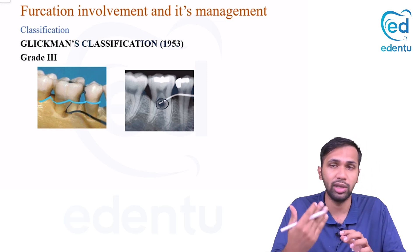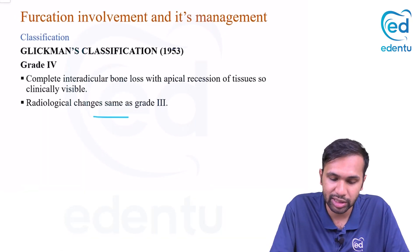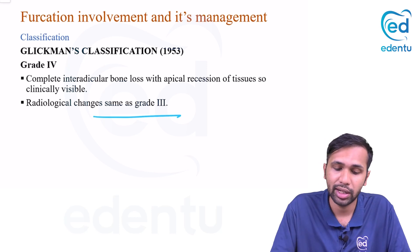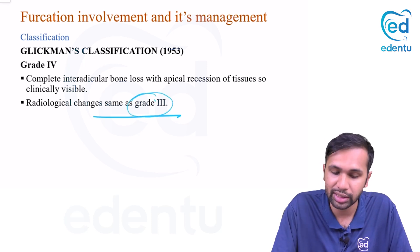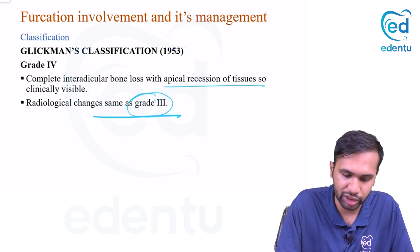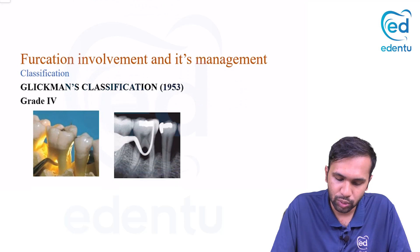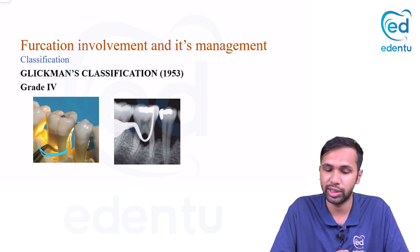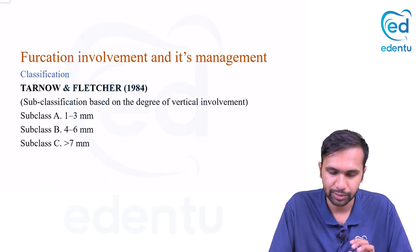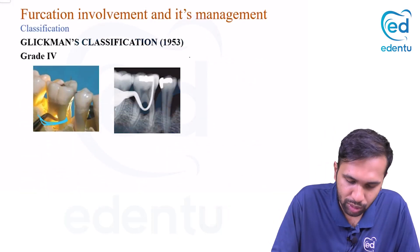Grade four is the same as grade three but the furcation is visible in the oral cavity. The grade three through-and-through furcation is accompanied by apical recession of soft tissues, so the furcation is also exposed clinically due to recession — the gingiva has receded and the furcation is exposed to the oral cavity.